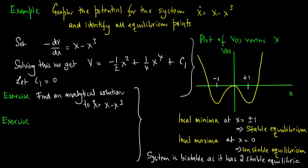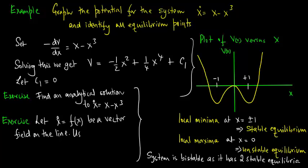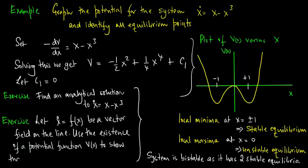Here is another exercise. Let x dot equals f of x be a vector field on the line and use the existence of a potential function V of x to show that the solutions cannot oscillate. This is closely related to the earlier lecture on the impossibility of oscillations of x dot equals f of x.